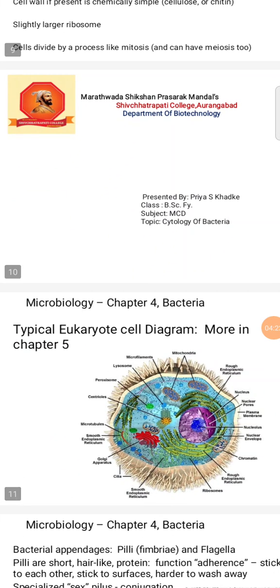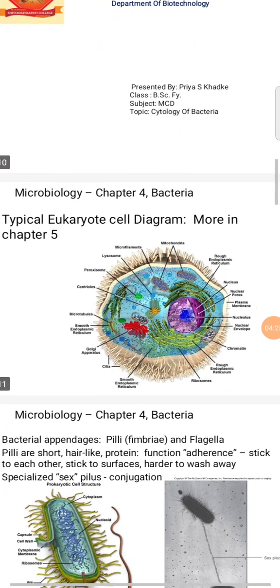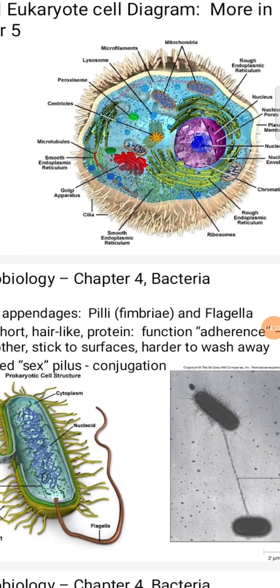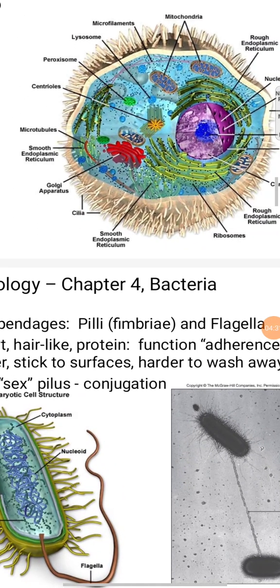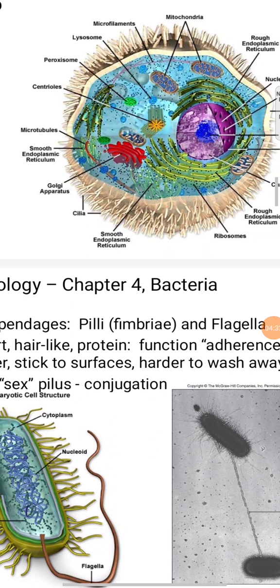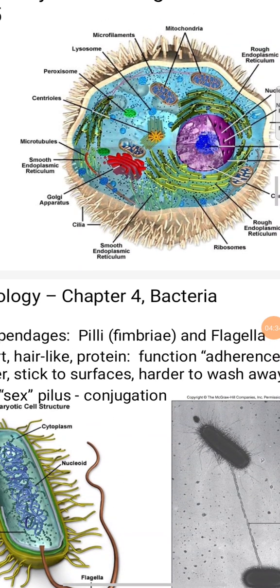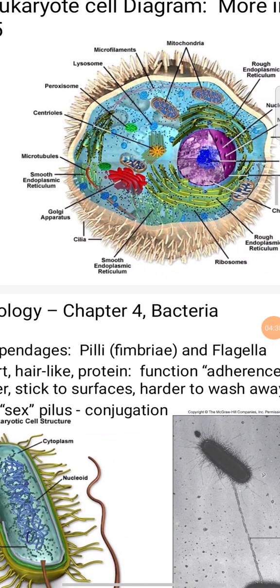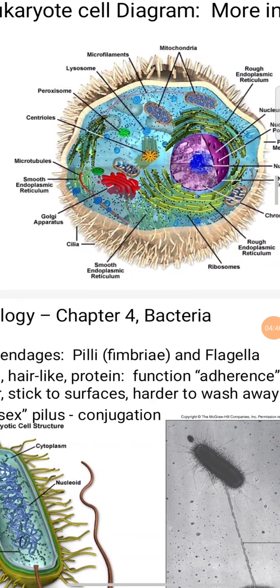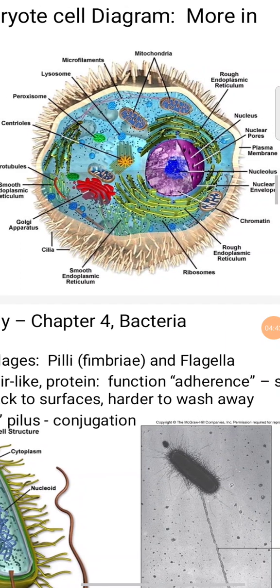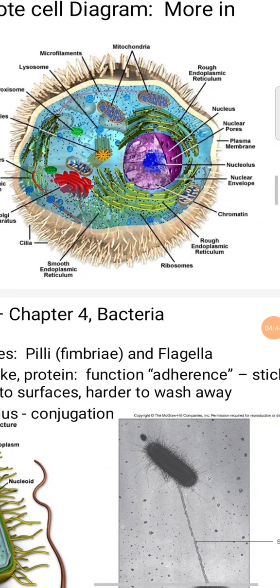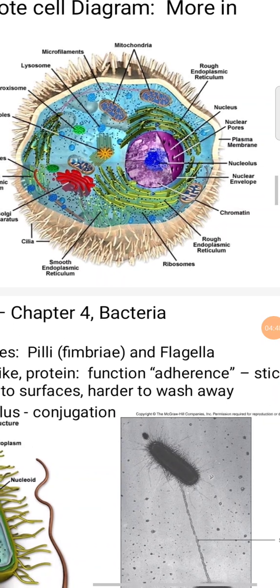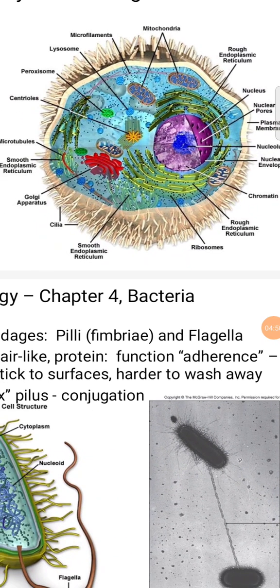Eukaryotic cells contain the following parts: smooth endoplasmic reticulum, cilia, Golgi apparatus, rough endoplasmic reticulum, centrioles, peroxisomes, lysosomes, microfilaments, mitochondria, nucleus, nuclear pores, plasma membrane, nucleolus, nuclear envelope, chromatin, and ribosomes.